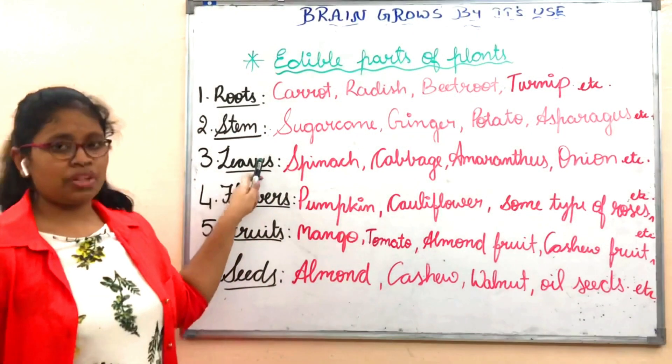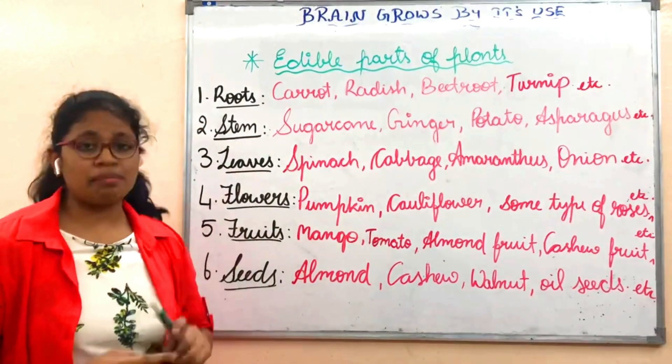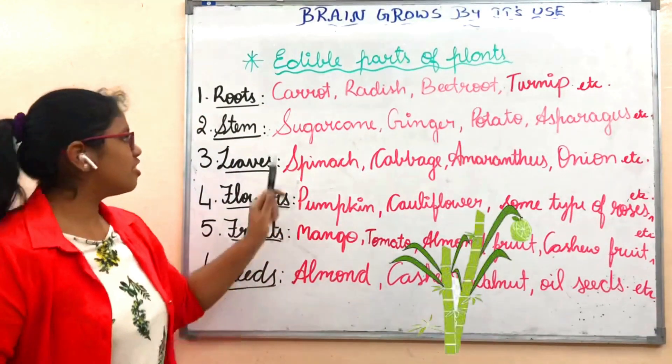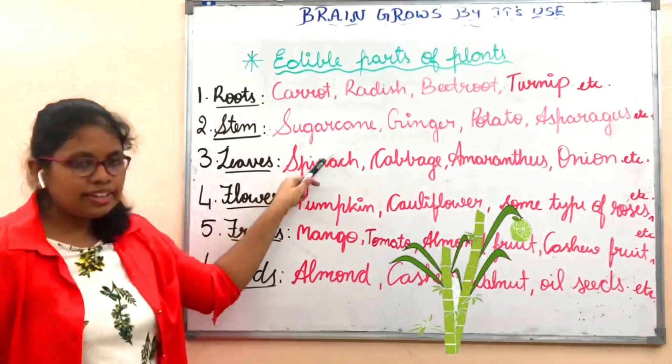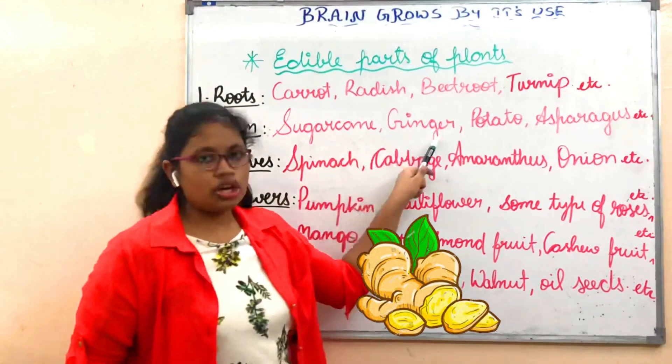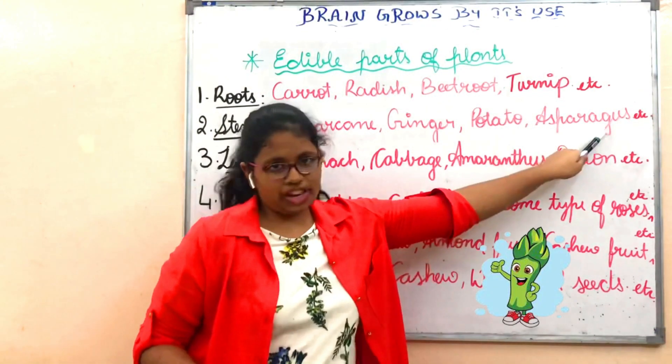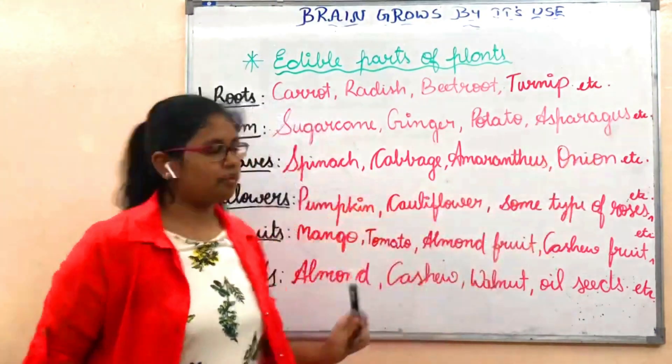Stem. We eat stem in the form of sugar cane, ginger, potato, asparagus, etc.